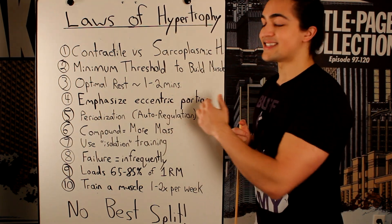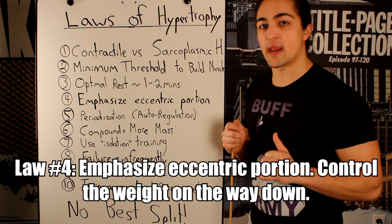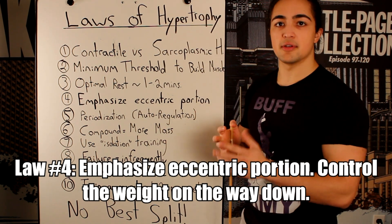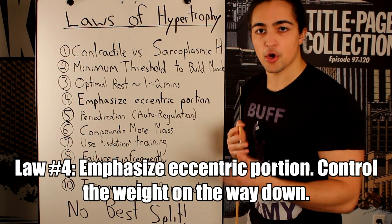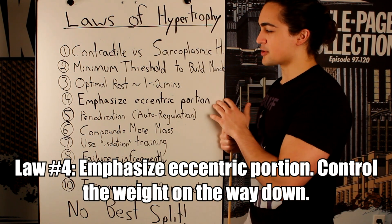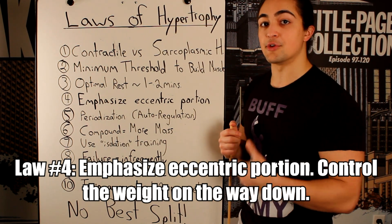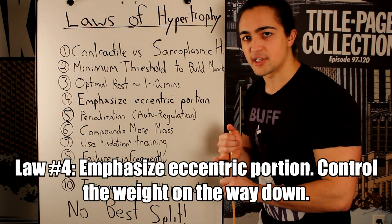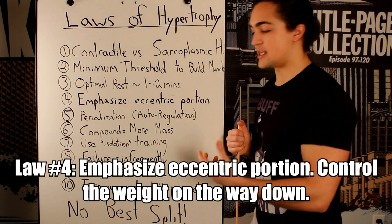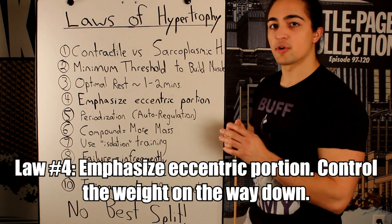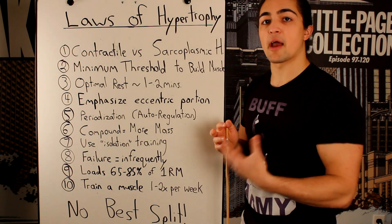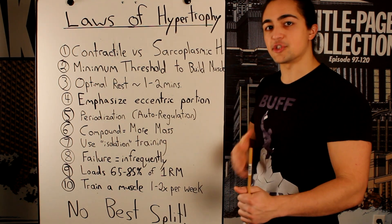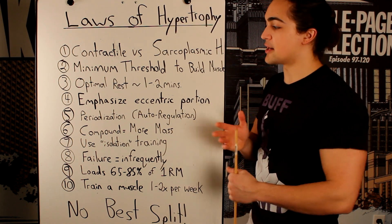Law four: emphasize the eccentric portion — the lowering of the weight. This is specifically if you purely want to build muscle. If you do this too often, you could incur overtraining, and if you also want to build strength, it might not be the best idea to do frequently. However, we're talking about mechanical tension and inducing metabolic fatigue. The eccentric portion induces the most mechanical tension and the most stress on your body, which is good — stress is important to perturb the body to change.